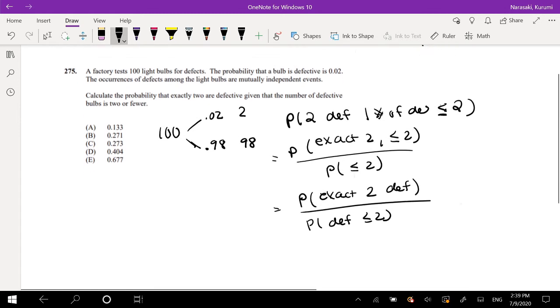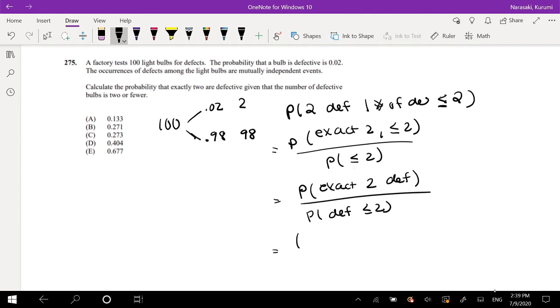Okay, so what is the probability that exactly 2 is defective? Well, that's out of 100, exactly 2 is defective, right? And what's the probability that it's defective? That's 100 choose 2, times 0.02 to the 2, times 0.98 to the 98.